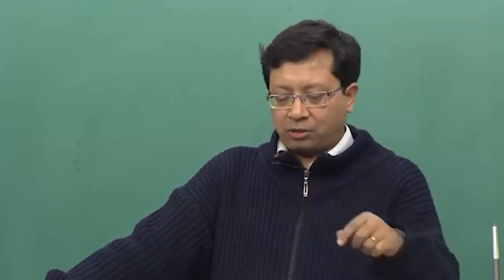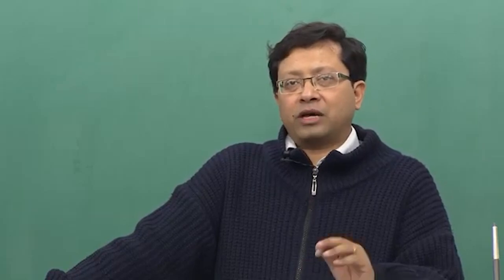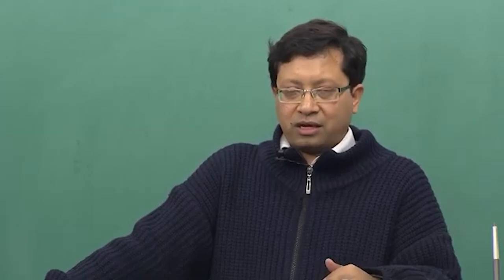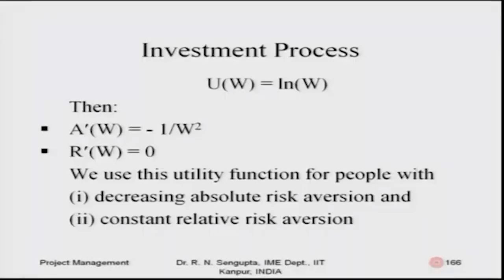Let us go through the example for the logarithmic utility function. The logarithmic utility function is ln(w), and remember w is always positive. If I differentiate that and use the double differentiation concept, the value of a prime comes out to be minus one by w squared. Since w squared is always positive, the sign of a prime is always negative, which means it has a decreasing absolute risk aversion property.